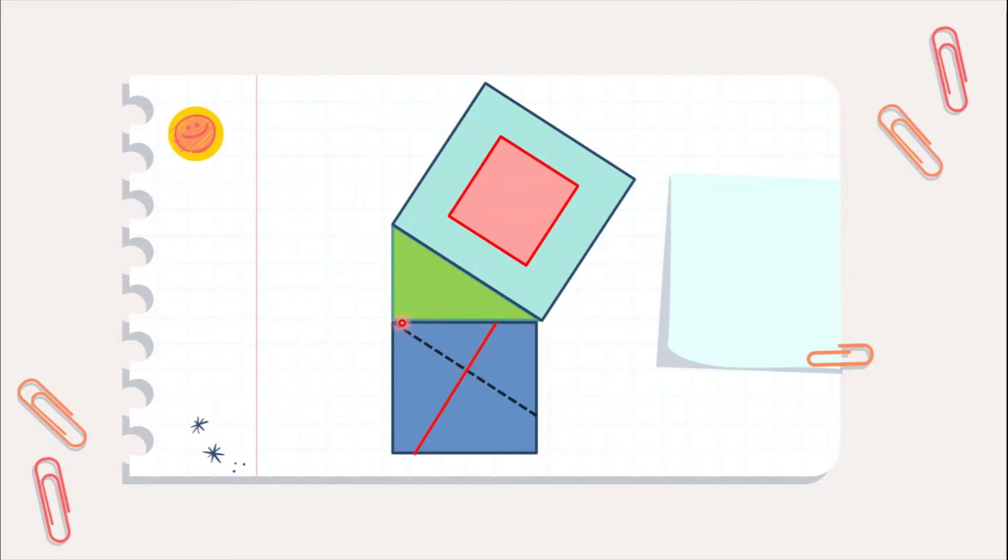Now, use scissor and cut this blue square. And after this, we will place these smaller parts in this bigger square.